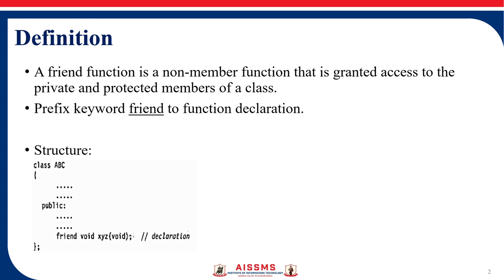So by using a friend function we are accessing the private or protected members of a data class. So why we are going for this function which is violating the object oriented programming concepts?